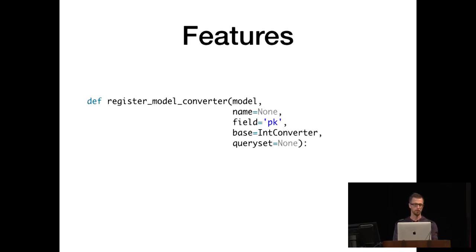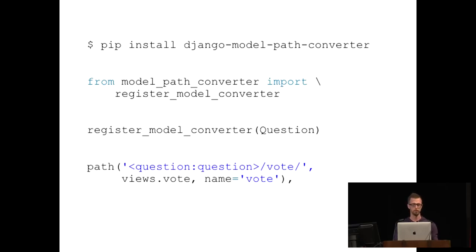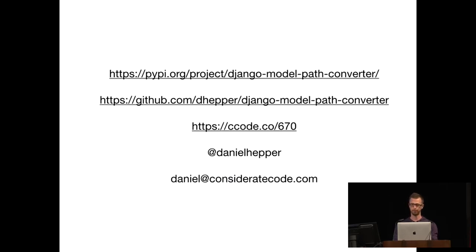You register the converter — I called it 'question converter' — and now your view receives a Question object directly, and you can also just pass a Question object to your URL reversal. You don't want to write a converter for each model obviously, so you can generalize it. I wrote a register_model_converter method that dynamically builds a model converter class. You can customize it with an optional name, different field for lookup, different base class if your primary key is a UUID, and also pass a queryset. I packaged that in a Python package: pip install django-model-path-converter. Links to PyPI and GitHub, plus my Twitter and email if you want to tell me why that's a bad idea. Thank you.